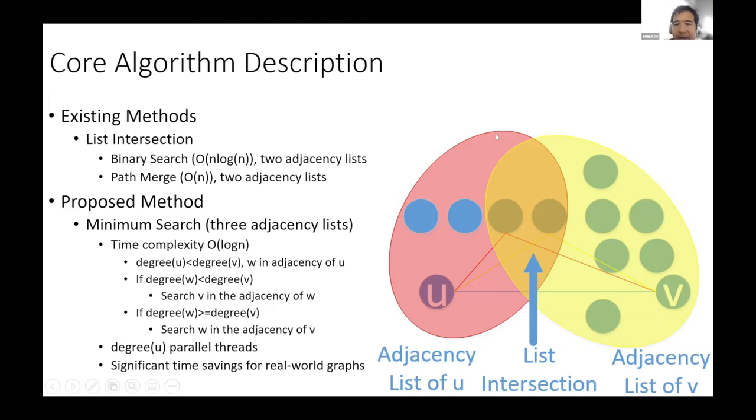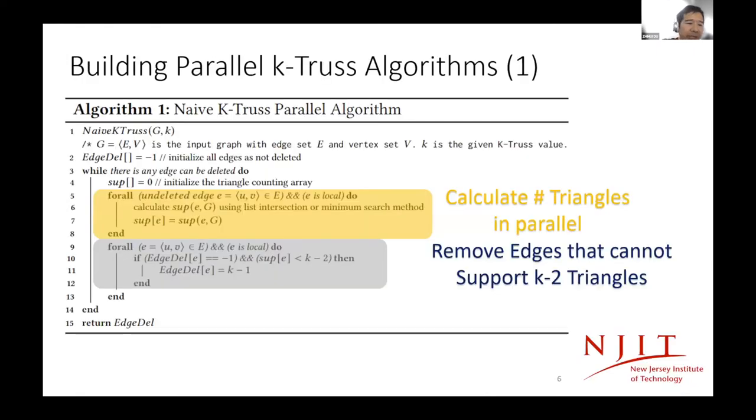The right side is a very simple example of a list intersection-based method. Based on our minimum search-based algorithm core, we build two versions of our K-truss algorithm. The first is the naive version. It is very simple. First, we calculate the total number of triangles for each vertex in parallel. Then we remove the edge if it cannot support K-2 triangles. Then we continue the loop until no edge can be removed. This is the naive version of the K-truss method.